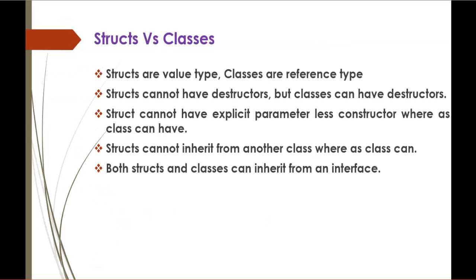We will jump back into the slide. The third difference is structs cannot inherit from another class whereas a class can. It means that inheritance is not supported in structs whereas classes support inheritance. And the other thing is both structs and classes can inherit from an interface. What is an interface? We will see that in the coming session.